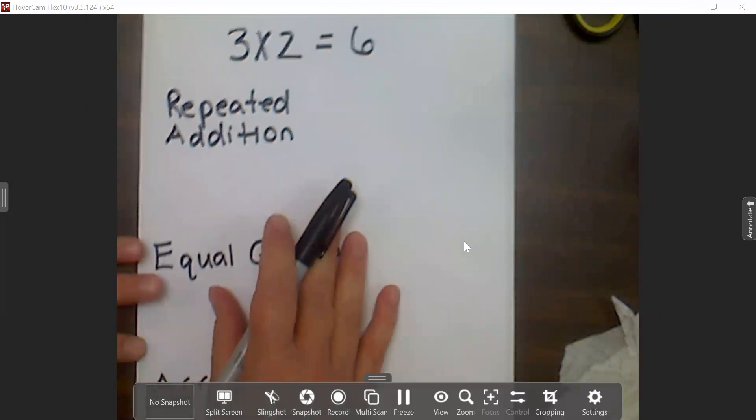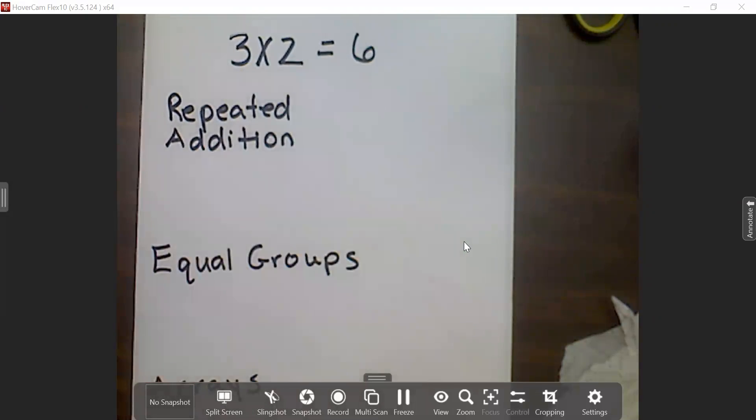I have a simple problem: three times two equals six. One of the strategies is repeated addition.